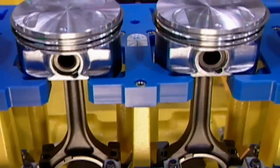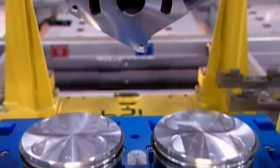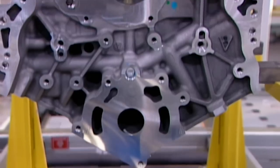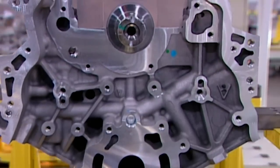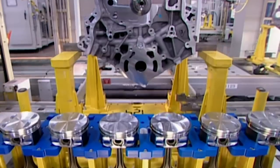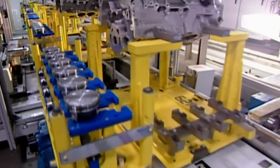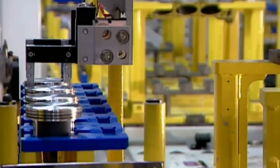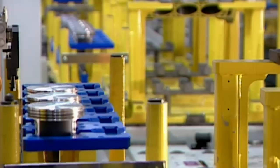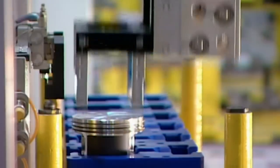The pistons come next, six, because these are six cylinder engines. The pistons are made of aluminium. Robots install them into the cylinder bores of the engine block. A steel connecting rod attaches each piston to the crankshaft.